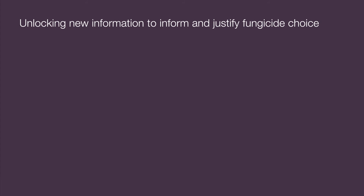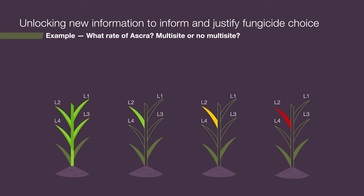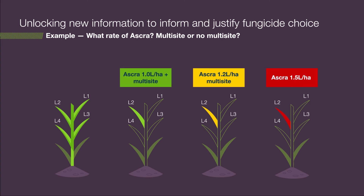This technology is designed to help unlock that unknown by providing you with more information to help inform and justify fungicide choice. For example, if we knew the real levels of disease inside your crop's leaf 2 at the T2 timing, we would be able to use this information to help us choose the most appropriate rate of, for example, ASCRA, and decide whether to use a multisite. This will not only help make your fungicide choice more appropriate, it will also make your spend more appropriate, ensuring better value for money from your fungicide choice.